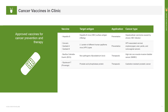Approved preventative cancer vaccines are all targeting viral antigens, protecting patients from cancers caused by HPV. Two therapeutic vaccines have been approved. Among them, Sipucel-T is a dendritic cell-based vaccine which uses autologous dendritic cells to stimulate cellular immune responses mediated by T cells against prostatic acid phosphatase in castration-resistant prostate cancer patients.